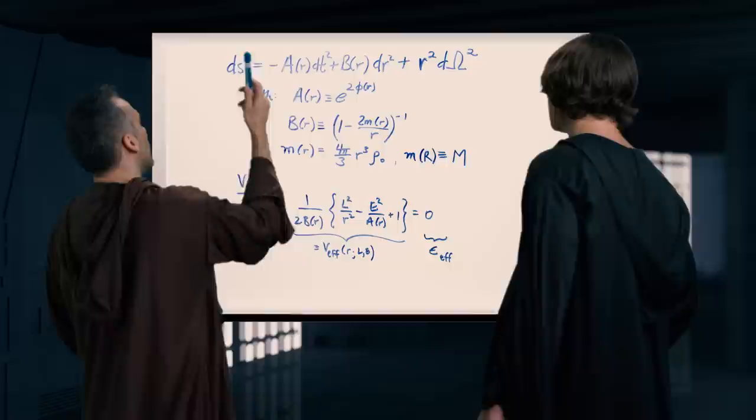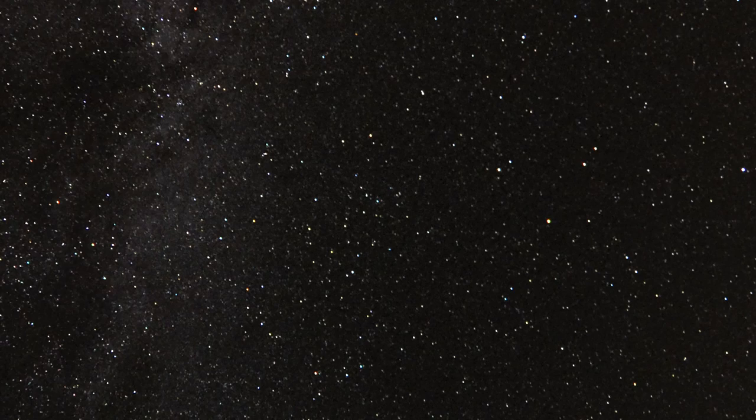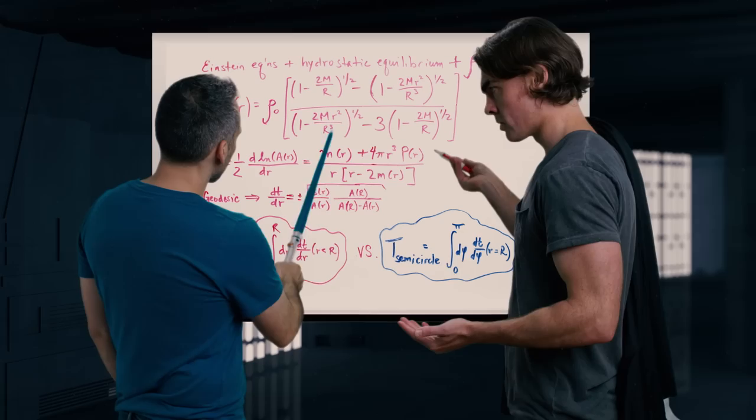So here's where I am so far. You start with the general spherical symmetric metric and the effective potential formulation for radial geodesics. And from there... OK, sir. We evaluate these integrals, see which one's bigger, and that tells us who wins the race. I think that's it.